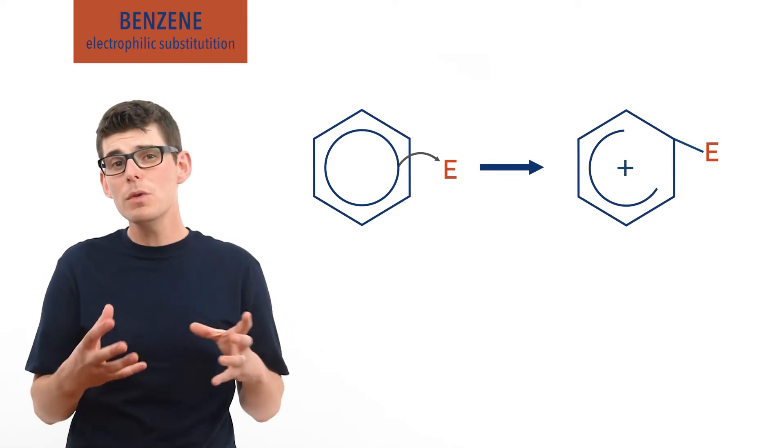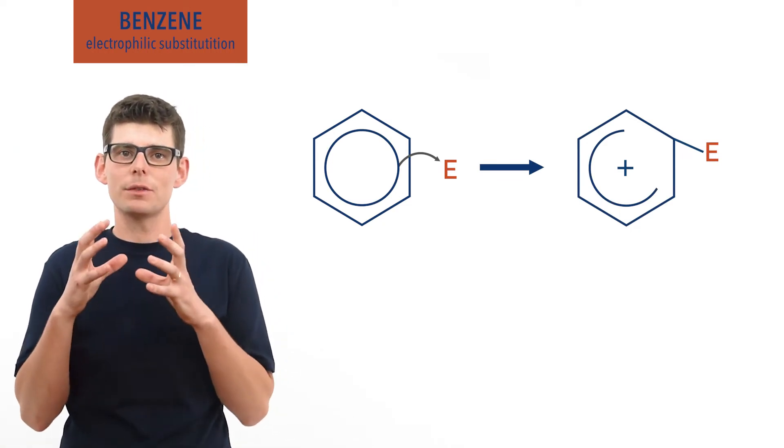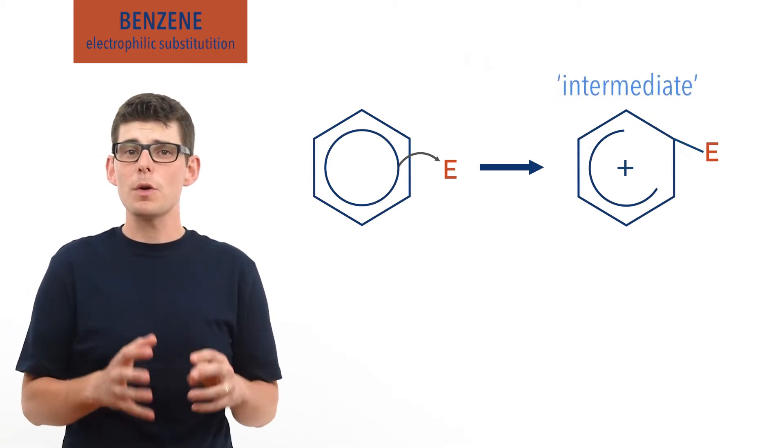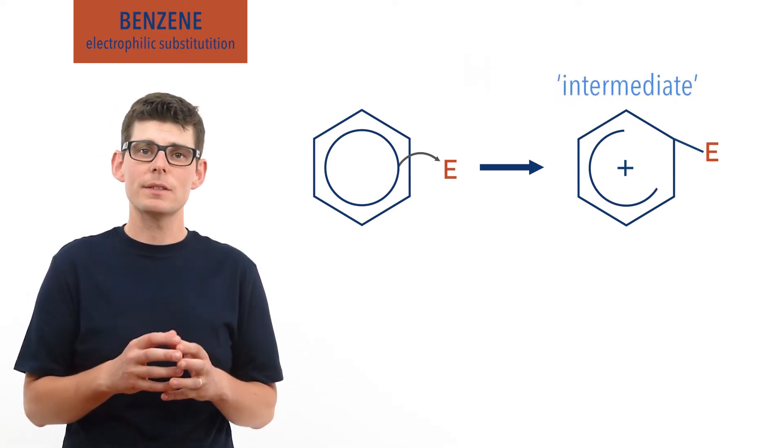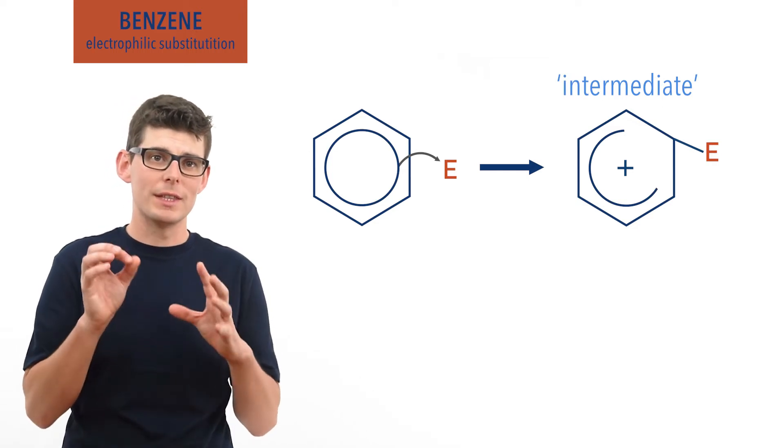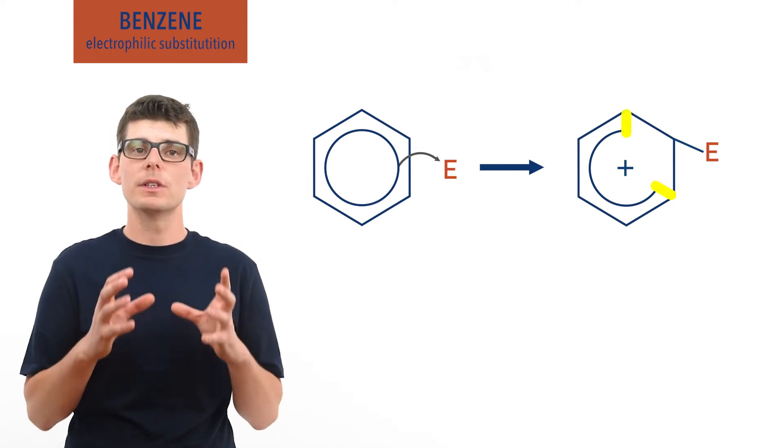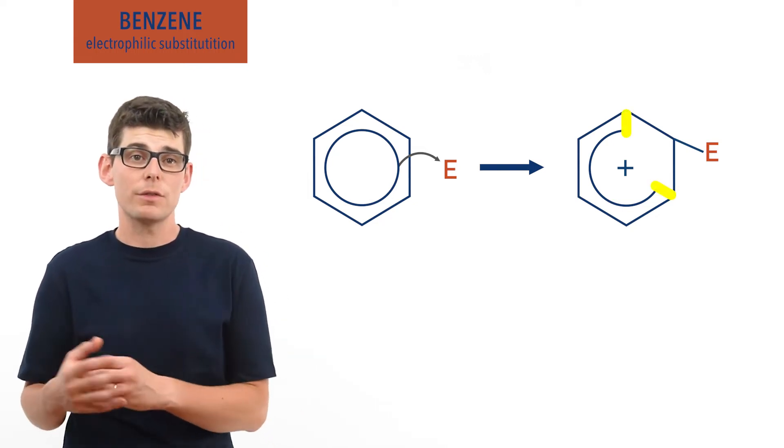This removal of a pair of electrons breaks the delocalized electron system and an intermediate is formed. This broken system is shown as an incomplete circle with a positive charge in the middle. The broken ring starts and ends either side of the carbon that has formed the new bond with the electrophile.